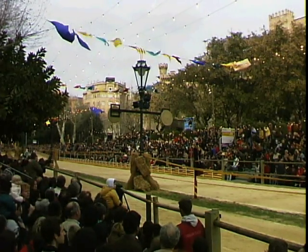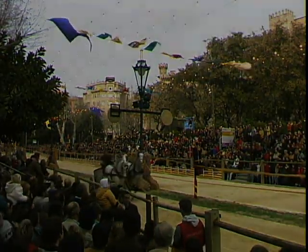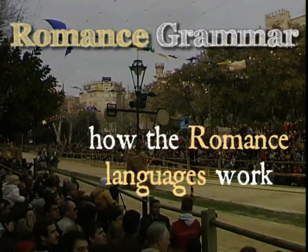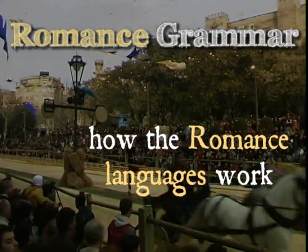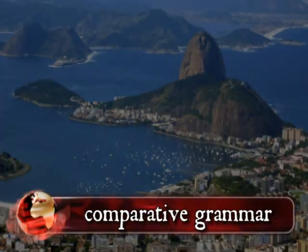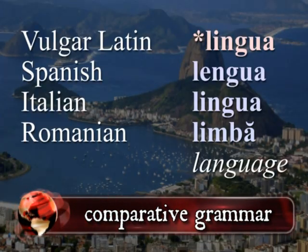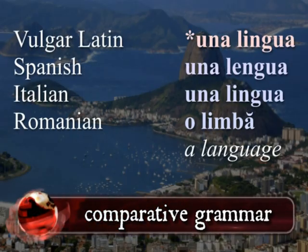So what is a comparative grammar of the Romance languages? Very briefly, a grammar is how a language works. So a Romance grammar will tell you, or give you an idea of, how the Romance languages work. This grammar will be comparative because instead of just looking at individual languages like just French or only Spanish, we'll explore examples from multiple languages in each topic.